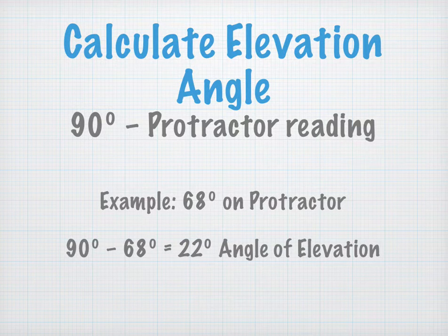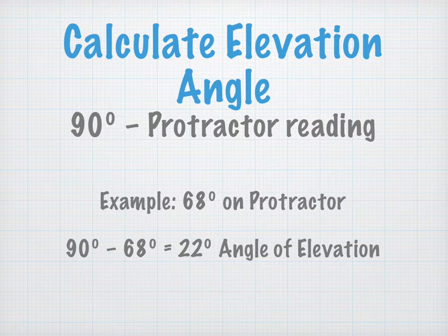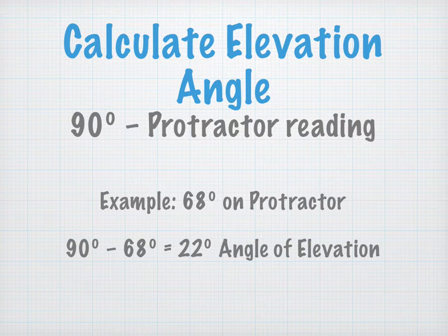After you have your protractor reading, we're going to subtract it from 90 degrees. So our angle was 68 degrees, so it actually is an angle of elevation of 22 degrees.